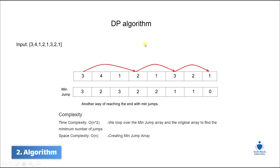The time complexity for the dynamic programming algorithm is O(n²) because we have two arrays and loop over them. The space complexity is O(n) because we have to create an additional array for min_jump. This is why the greedy method is better in terms of time and space complexity. Let's review the greedy method in the next section.